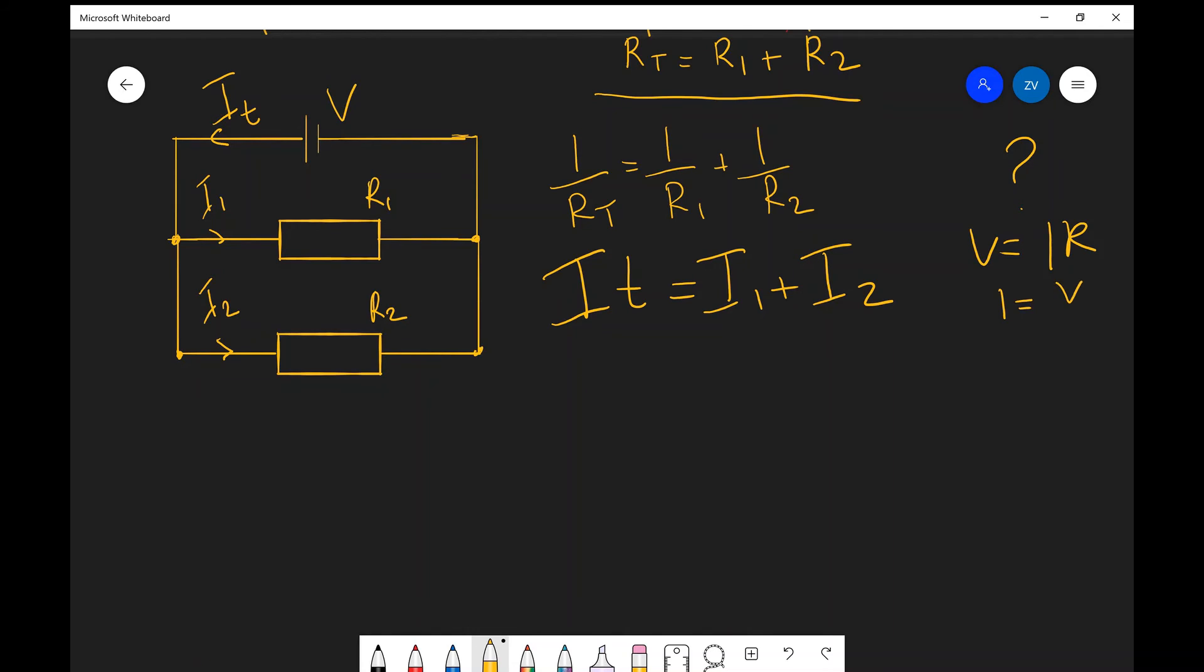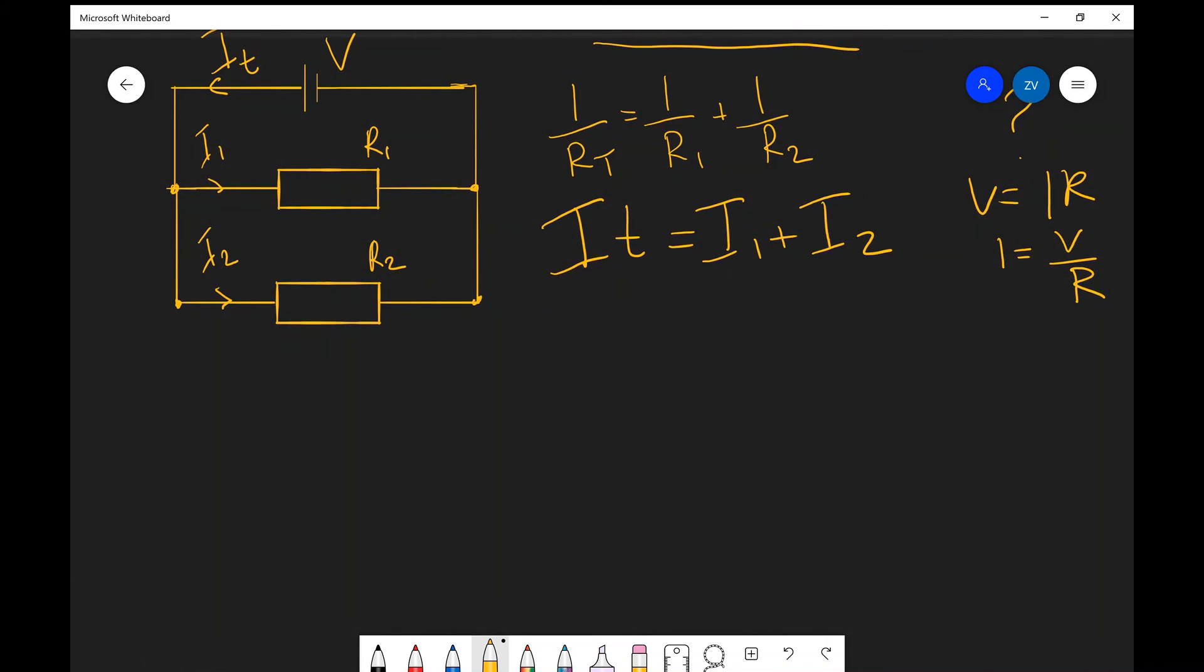So IT is going to equal V over R total, like so. This is going to equal V over R1 plus V over R2. As we said, the potential difference is constant across those branches, so what we can do is cancel out those V's across there.